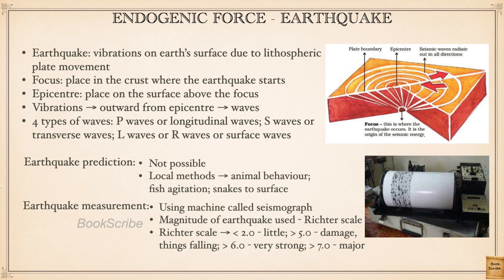Is it possible to predict earthquakes? Not yet, and not really possible because it is a sudden movement — the vibration starts suddenly and damage follows. However, over the years, local methods have been used in some countries, civilizations, and villages. These include studying animal behavior, such as the reactions of dogs, cats, or birds; fish agitation, where fish suddenly start moving up and down quickly; and snakes suddenly coming out of their burrows in large numbers.